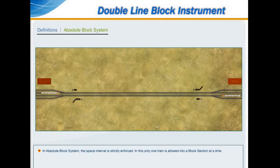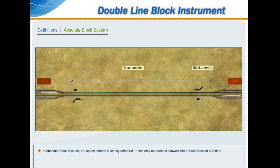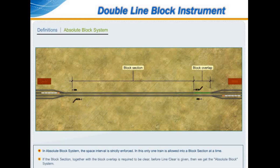In the absolute block system, the space interval is strictly enforced. Only one train is allowed into a block section at a time. If the block section, together with the block overlap, is required to be clear before line clear is given, then we get the absolute block system.